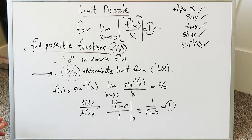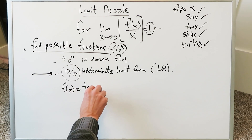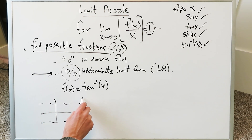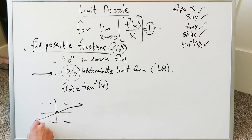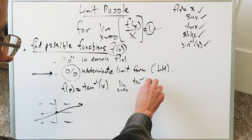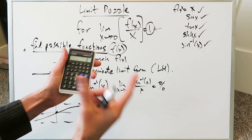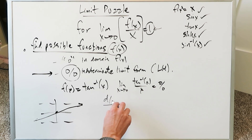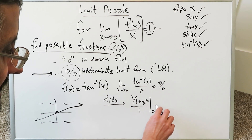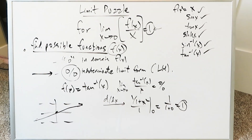How about f(x) = arctan x, or inverse tan? Its graph has horizontal asymptotes at ±π/2 and passes through the origin. The limit becomes arctan x / x. Plugging in 0 gives 0/0. Applying L'Hôpital's rule: the derivative of arctan x is 1/(1+x²), and derivative of x is 1. Plugging in 0: 1/(1+0) = 1. So inverse tan x fits the bill as well.